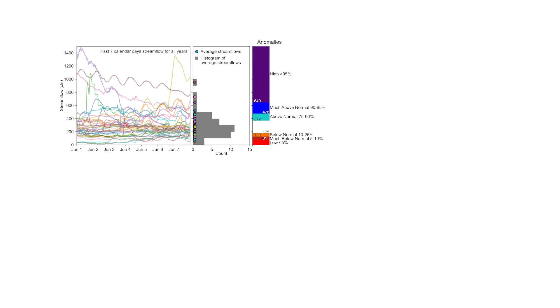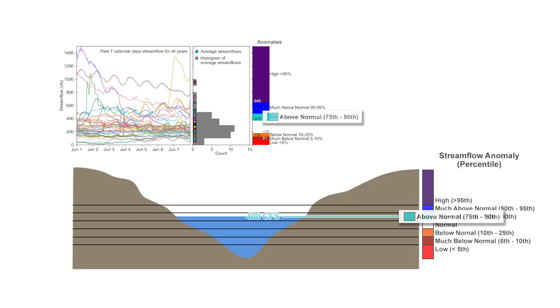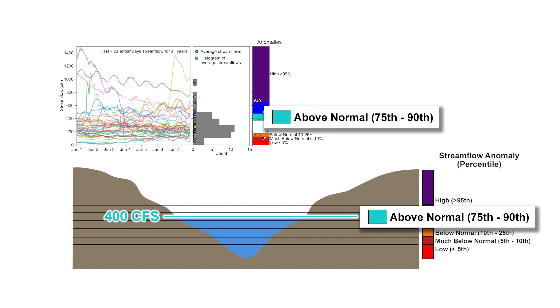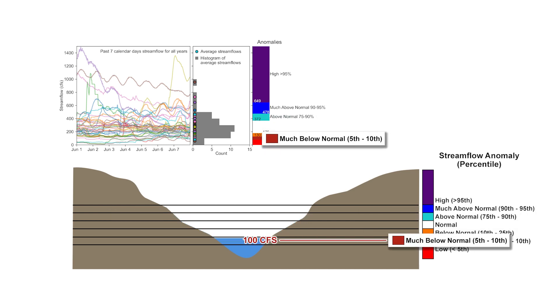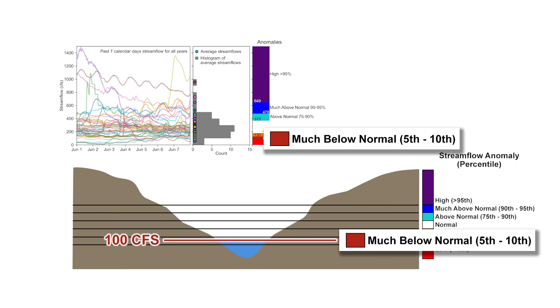For example, if the flow in our creek averaged 400 CFS over the past 7 days, this would be above normal. But if it only averaged 100 CFS, this would be much below normal.